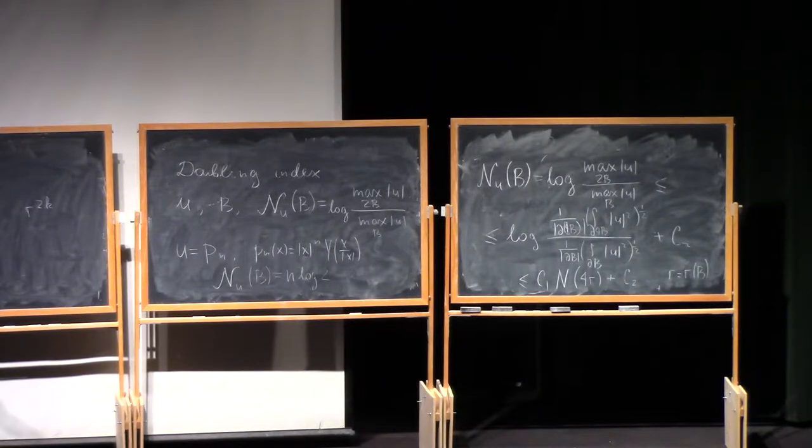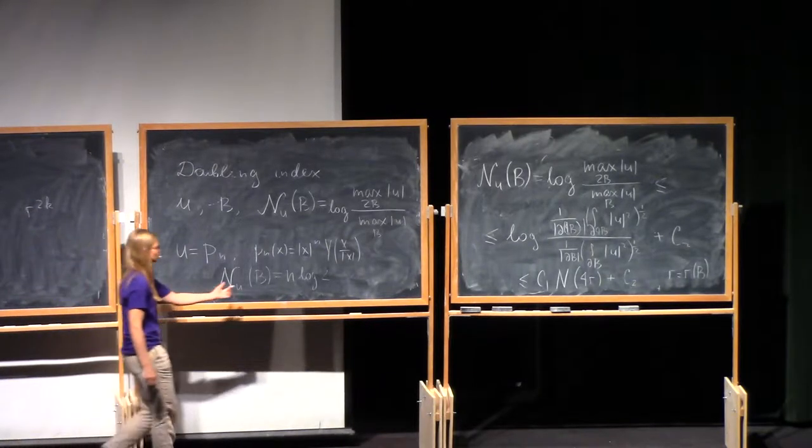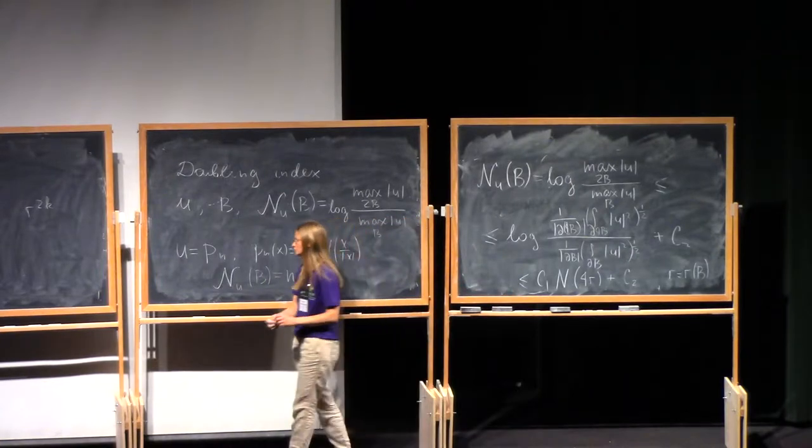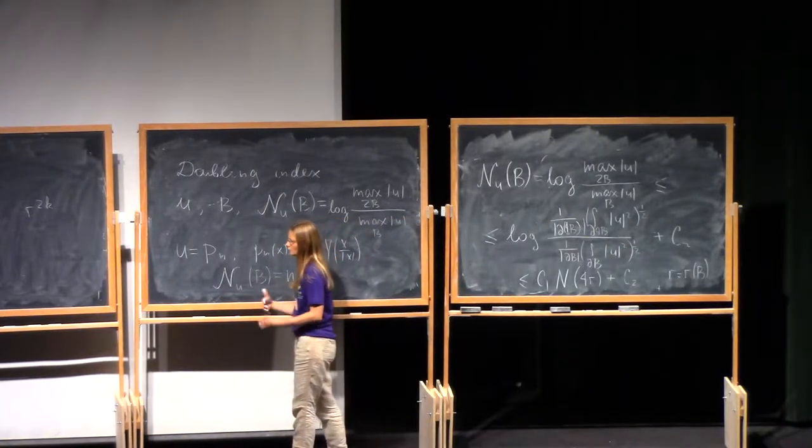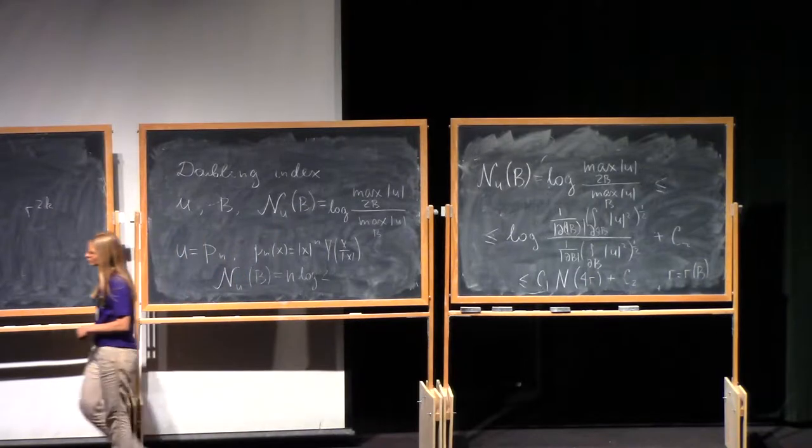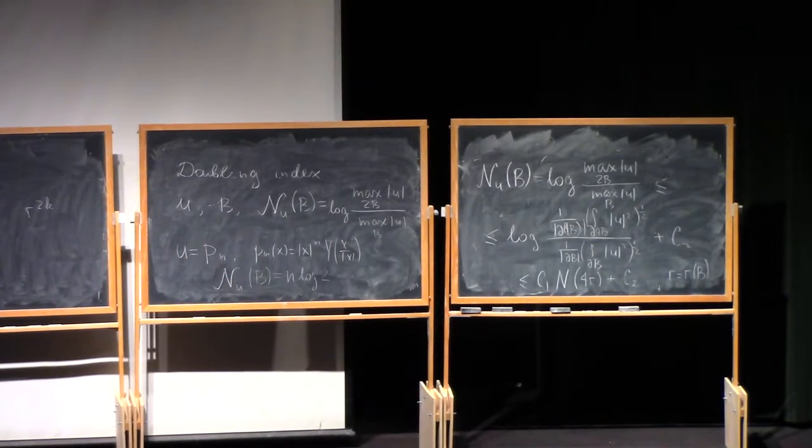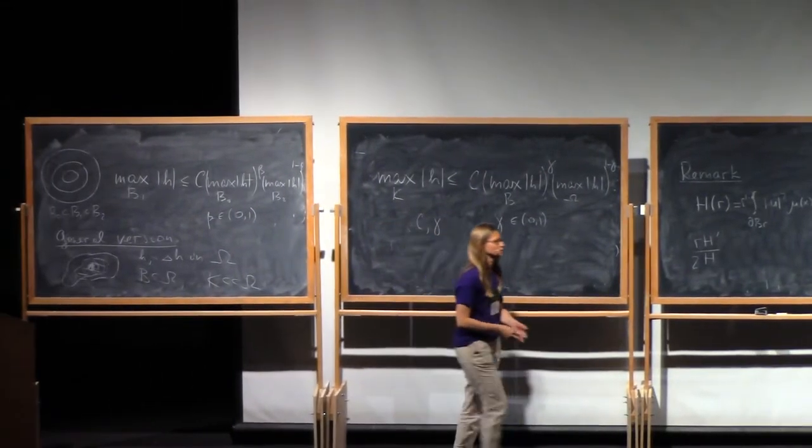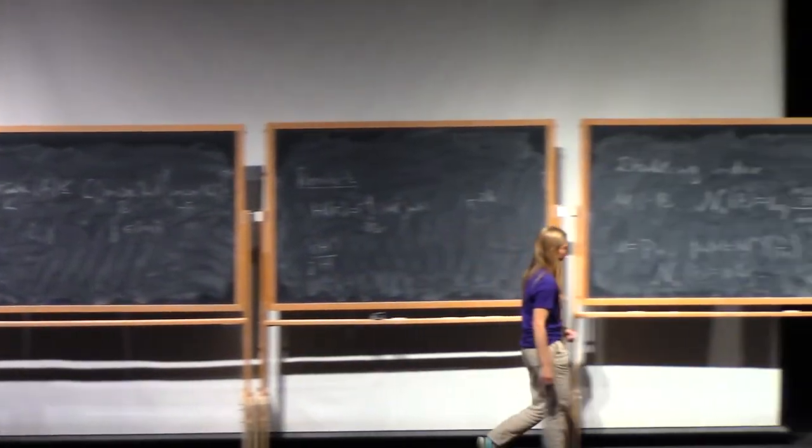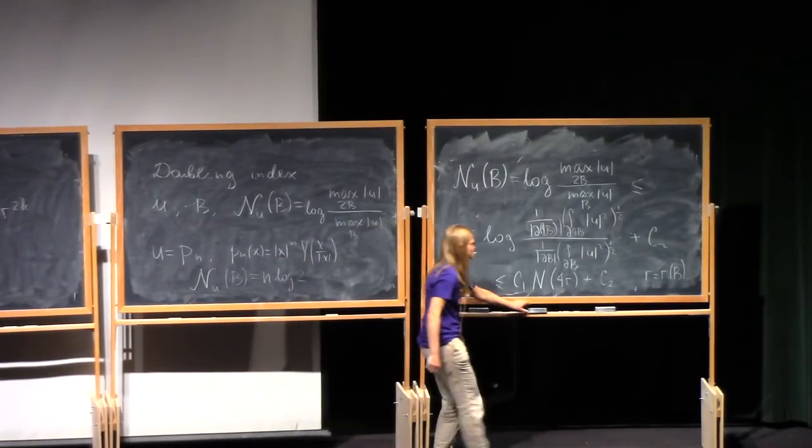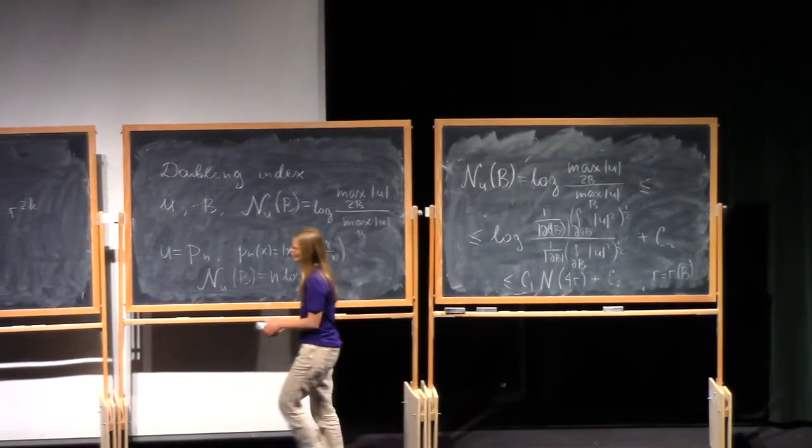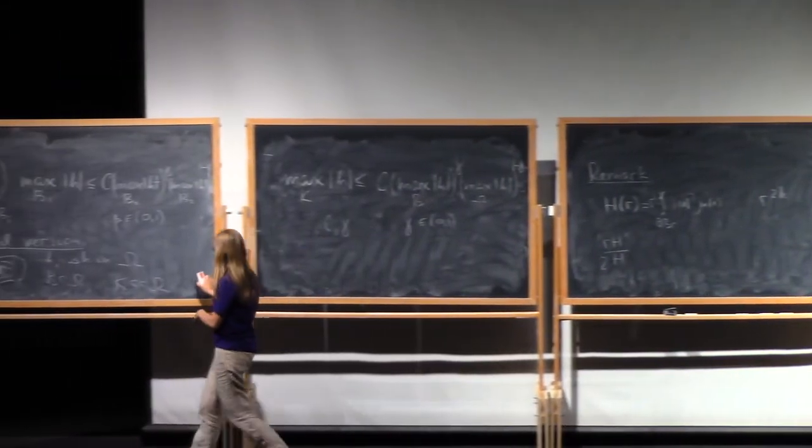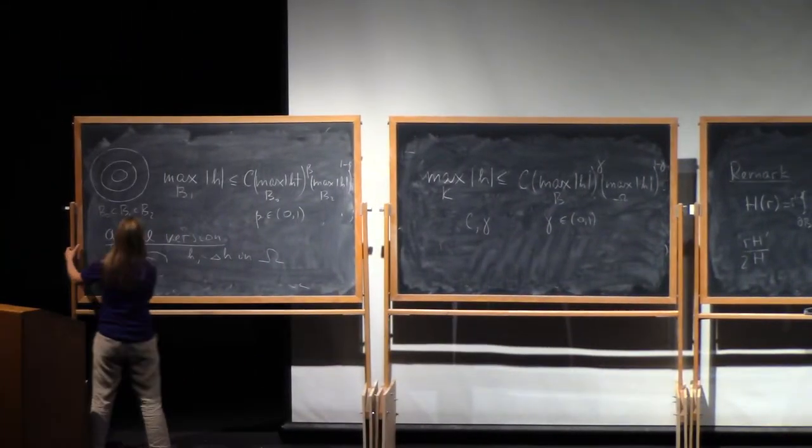If you allow some change of scale, instead of the ball, you take 4 times this ball and you estimate from above and I also add the constant there. But if one of those is large, another is large. If doubling is large, the frequency is large and vice versa.